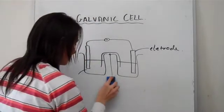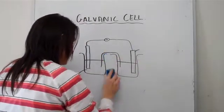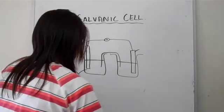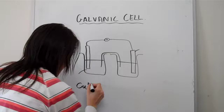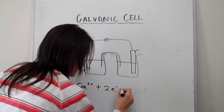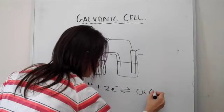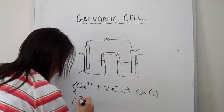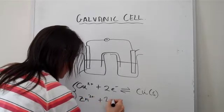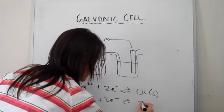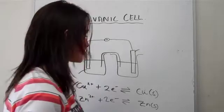I'll give you two reactions. First of all, copper two plus plus two electrons gives us copper solid. Secondly, zinc two plus plus two electrons gives us zinc solid. We have those two equations.